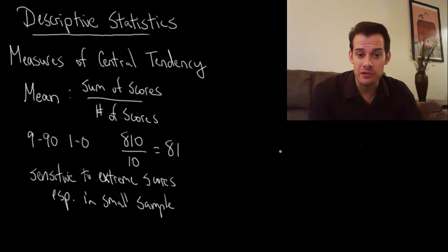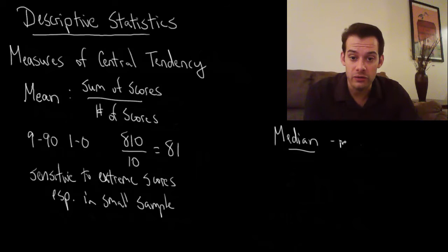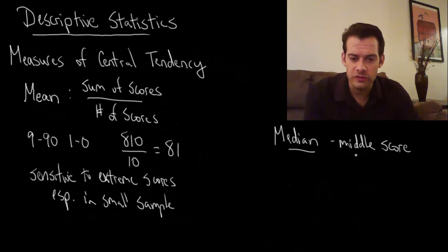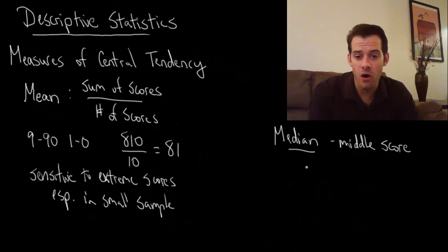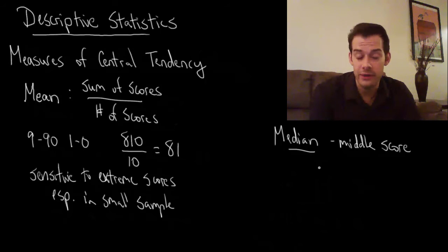Another measure of central tendency that doesn't have this problem is the median. The median is simply the middle score. To find it, all we have to do is line up our data in order — put each score in order — and then find which one is right in the middle.